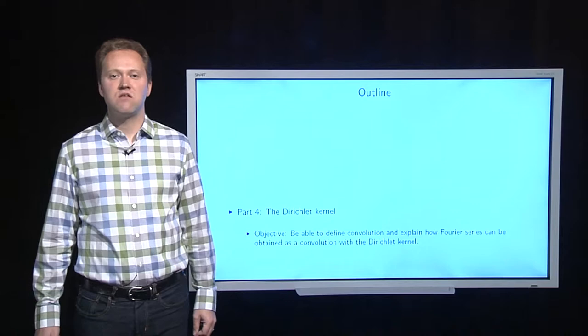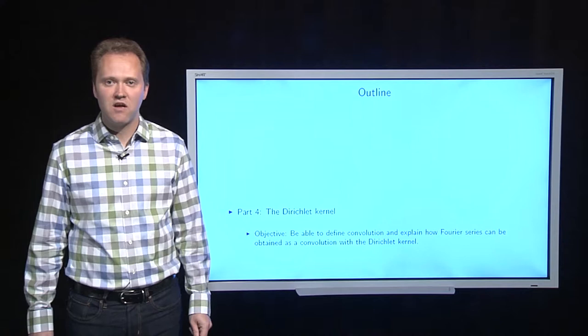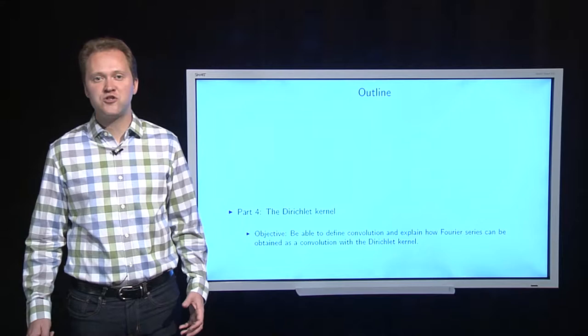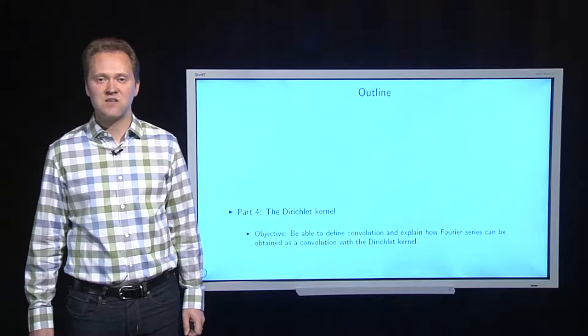The objective of this part is to be able to define a concept called convolution and explain how Fourier series can be obtained as convolutions with what is called the Dirichlet kernel. And these are steps that we take in order to try to prove the convergence theorem that we saw in part three that tells us that Fourier series actually work as approximations, that you actually recover your functions, assuming that they just have finitely many jumps.